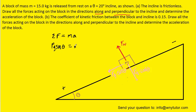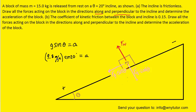We set FG sin θ equal to mass times acceleration. Since FG equals mg, we replace FG with mg. Mass then appears on both sides and cancels out, giving us acceleration equals g sin θ. Plugging in g and the angle with the calculator in degree mode, we get about 3.35 m/s². Since acceleration is a vector, we include its direction — down the ramp. This is the correct answer for the acceleration in part A.